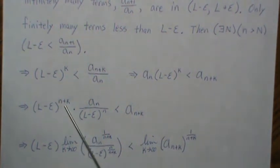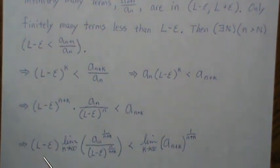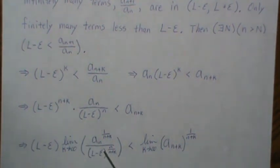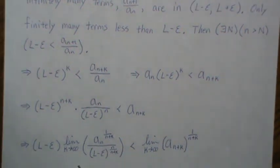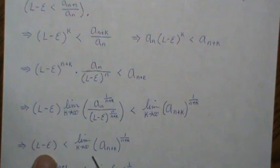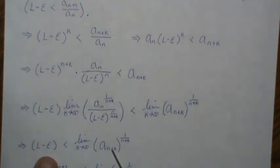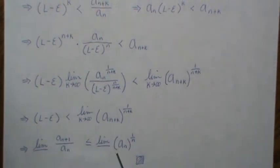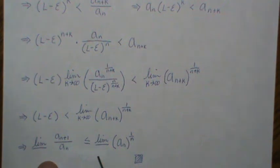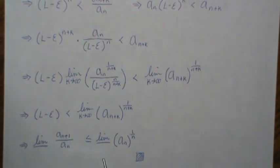Taking the (N + K)th root: the term without index K can be brought out front. All the exponents limit to zero as K goes to infinity, so those terms limit to one and we can drop them. This says the limit of the (N + K)th root of A_{N+K} is always bigger than L minus epsilon. Therefore the limit infimum of the nth root is bigger than the limit infimum of the ratio, and we're done.